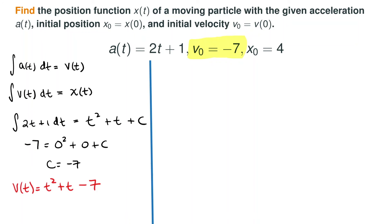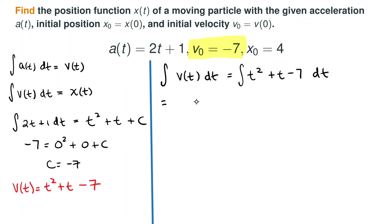v-sub-0 denotes the velocity when t equals 0. Since the initial velocity is negative 7, we set up: negative 7 equals 0 squared plus 0 plus C, so C equals negative 7. Our velocity function is v of t equals t squared plus t minus 7. Now we integrate the velocity function to get the position function, giving us 1/3 t cubed plus 1/2 t squared minus 7t plus a constant of integration.